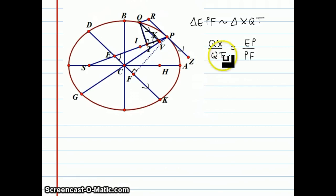Now, if I square both sides of this equality, I get that QX squared over QT squared is equal to EP squared over PF squared.